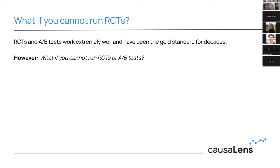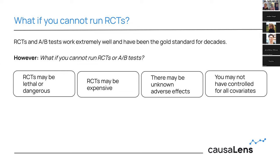While RCTs and A/B tests work extremely well and have been the gold standard for decades, oftentimes you can't actually run them. They may be lethal or dangerous in healthcare — you can't just decide to give one cancer patient treatment and withhold it from another. They may be expensive, requiring deployment to thousands of people. There may be unknown adverse effects, and you might discover the product has a negative impact. Lastly, you may not have control over all covariates, meaning the causal effect you estimate could still be biased.